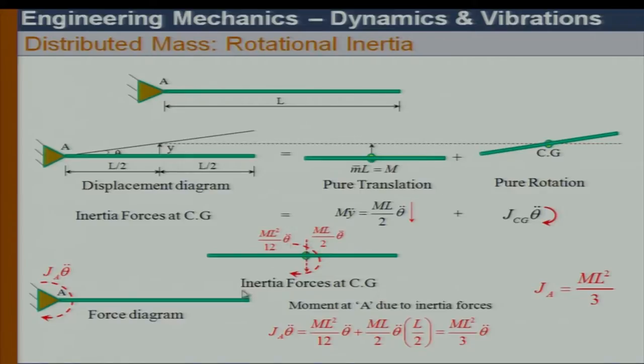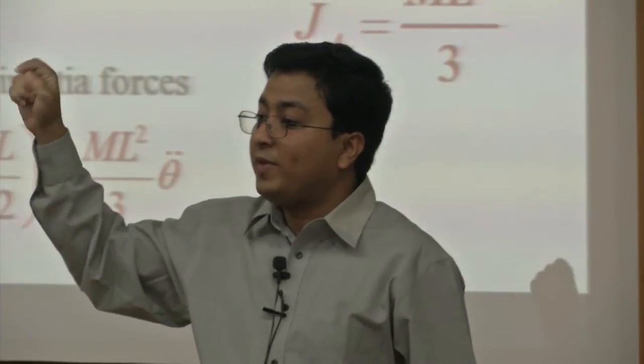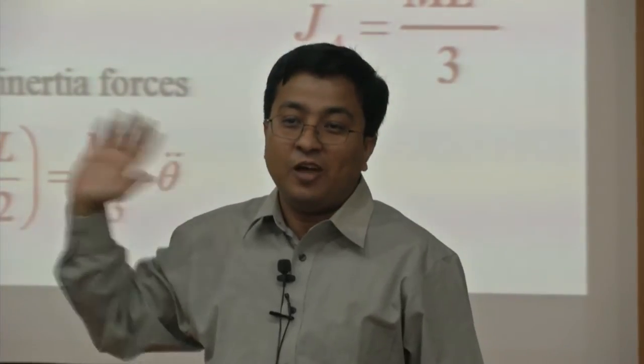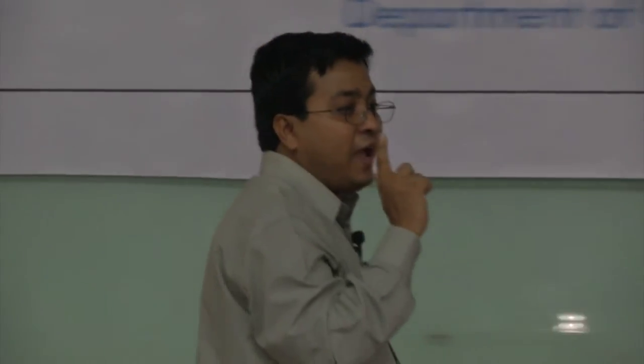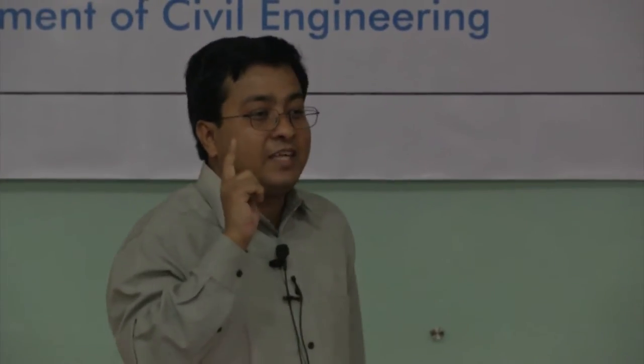The translational inertia force M·(L/2)·thetä plus the rotational inertia M·L²/12·thetä can be combined by going back to the equivalent force-couple system from the very first class. We want to find the rotational inertia about point A.